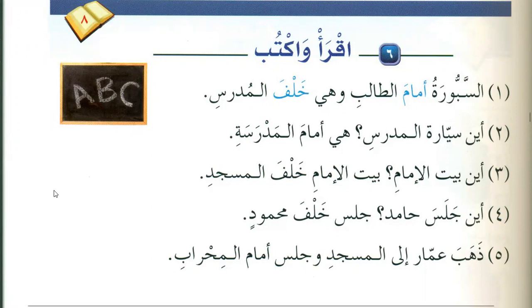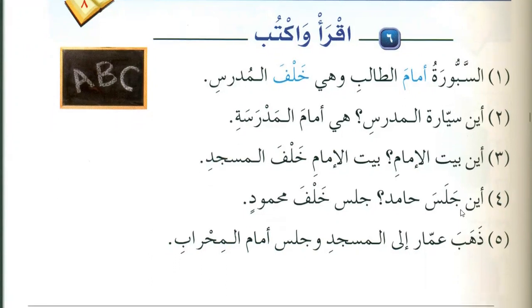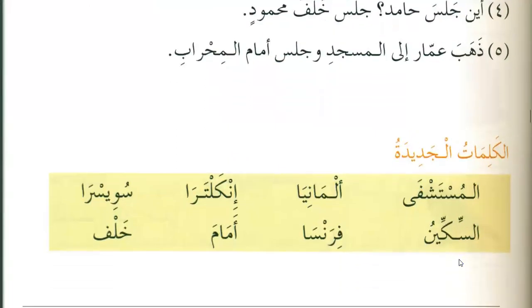Behind the masjid. Aina jalasa Hamid? Jalasa khalfa Mahmood — where did Hamid sit? He sat behind Mahmood. Zahaba Ammar ilal masjidi wa jalasa amamal mihrab — Ammar went to the masjid and sat in front of the mihrab. The mihrab is a spot in the masjid where the imam sits and gives the sermon.